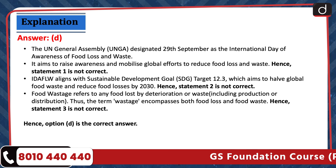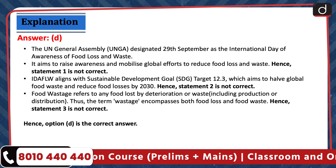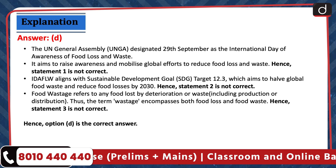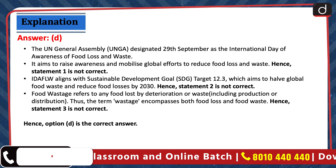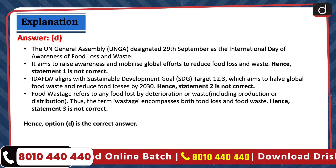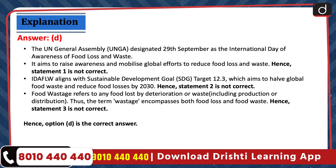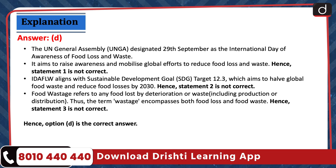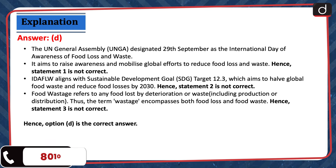The United Nations General Assembly designated 29 September as the International Day of Awareness of Food Loss and Waste, aimed to raise awareness and mobilise global efforts. Hence, statement 1 is not correct. IDA FLW aligns with SDG Target 12.3, which aims to halve global food waste and reduce food losses by 2030. Hence, statement 2 is not correct. Food wastage refers to any food lost by deterioration or waste, including production or distribution — the term encompasses both food loss and food waste. Hence, statement 3 is not correct. Option D is the correct answer.